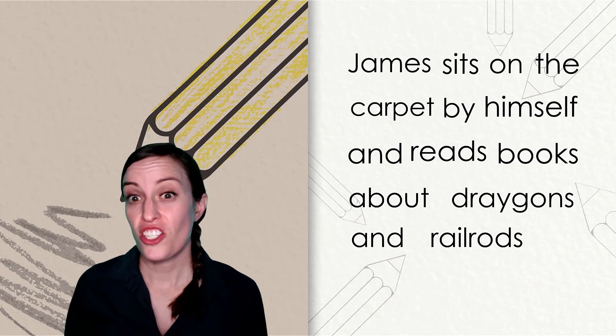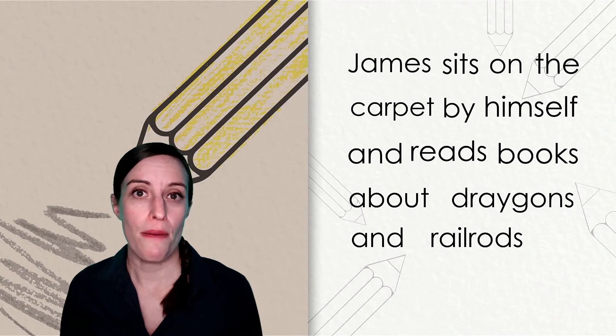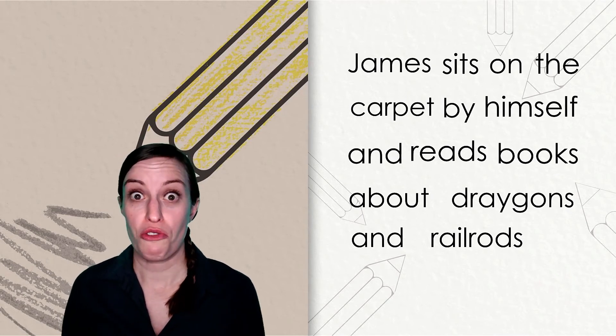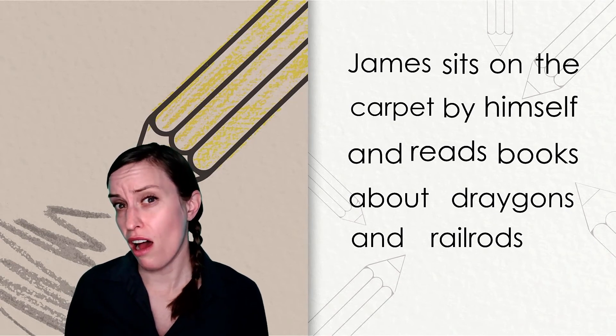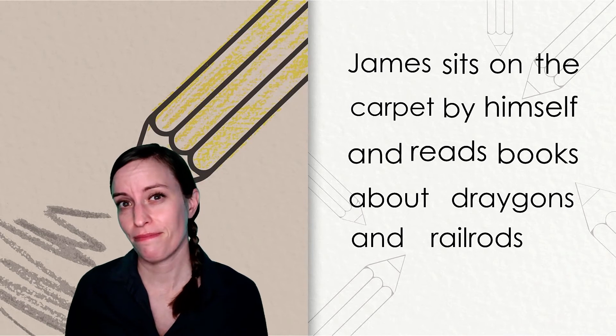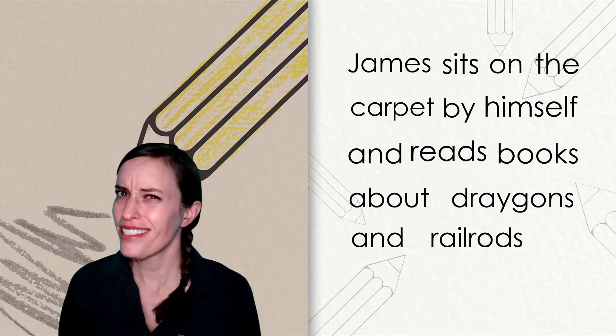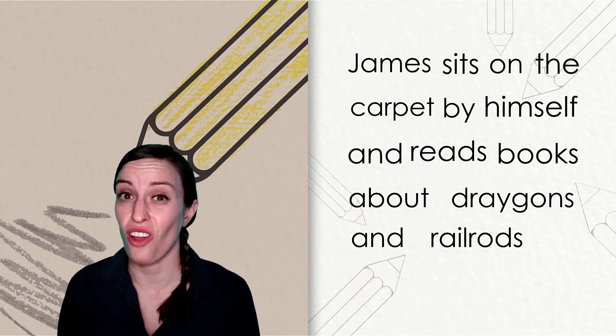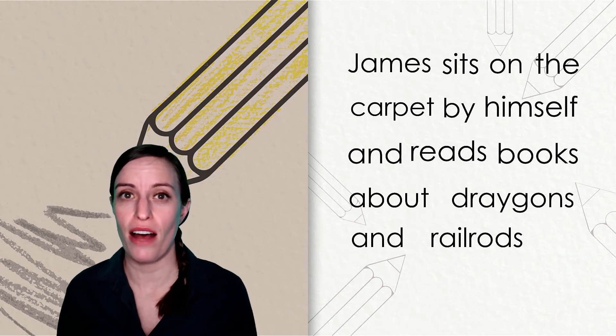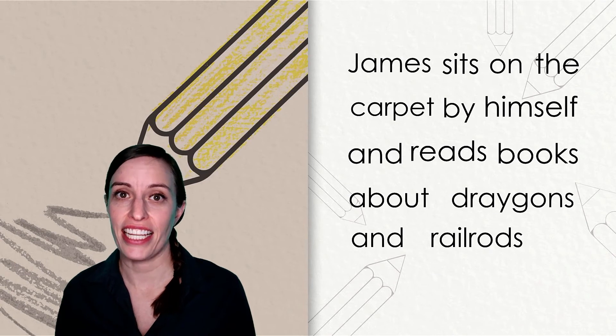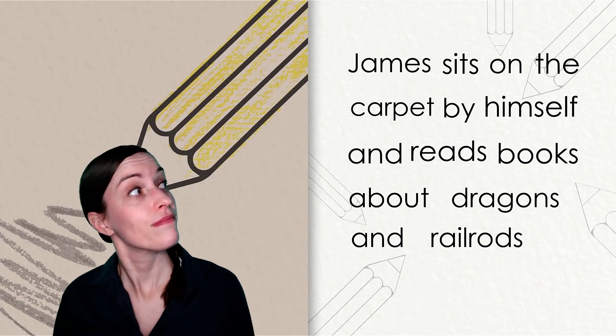Okay. James sits on the carpet by himself and reads books about. That's correct. Draygons. Draygons. Dragons. Do you think the author meant to say dragons? Dragons? Right now, the word says draygons because it has that vowel team A-Y making the long vowel A sound. We need to change it to a short vowel sound. D-R-A-G. So I'll take out that Y. That looks right.